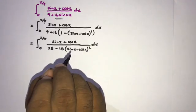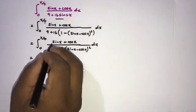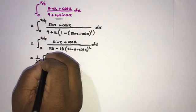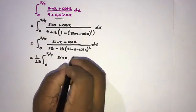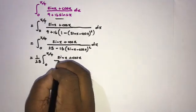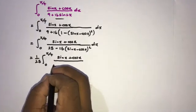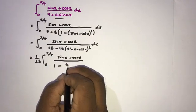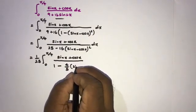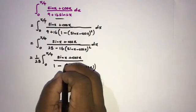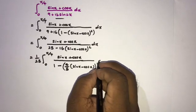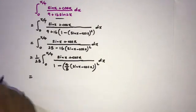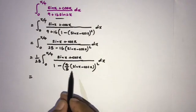Then I am going to take 1/25 as a common factor outside the integral sign: 1/25 times the integral from 0 to π/4 of (sin x + cos x) over (1 − (16/25)·(sin x − cos x)²) dx. Now 16/25 = (4/5)², so we write (4/5·(sin x − cos x))² in the denominator.